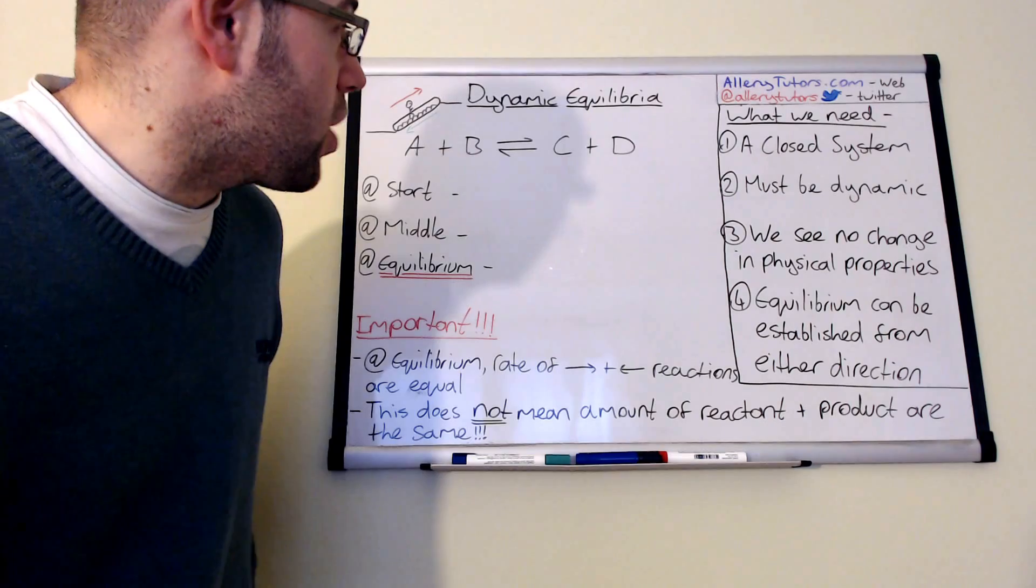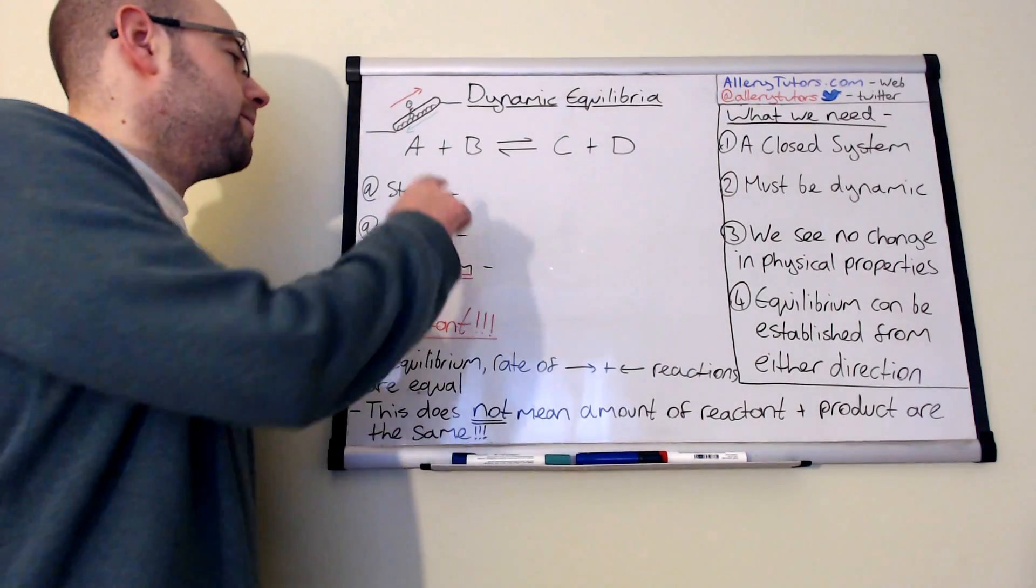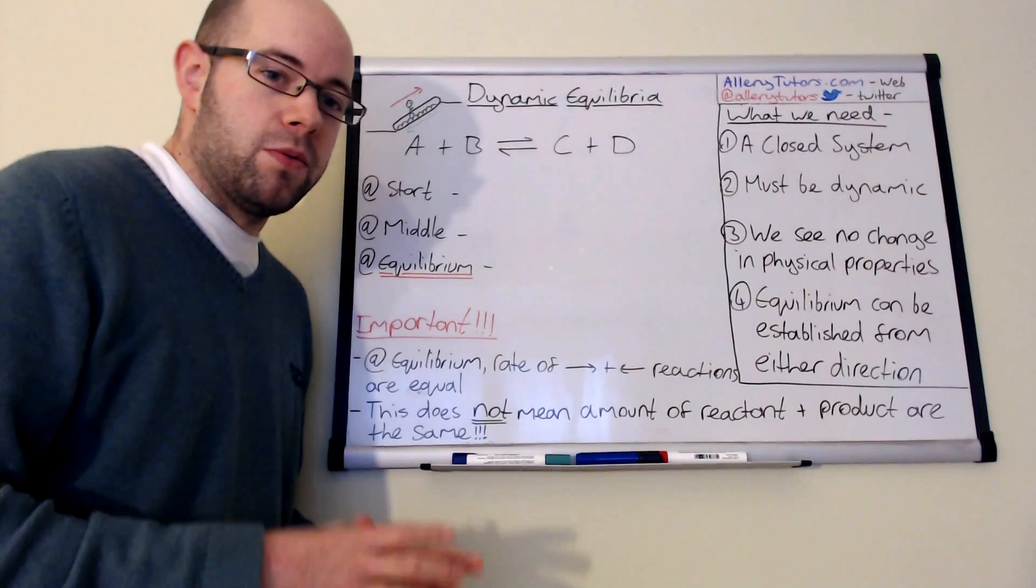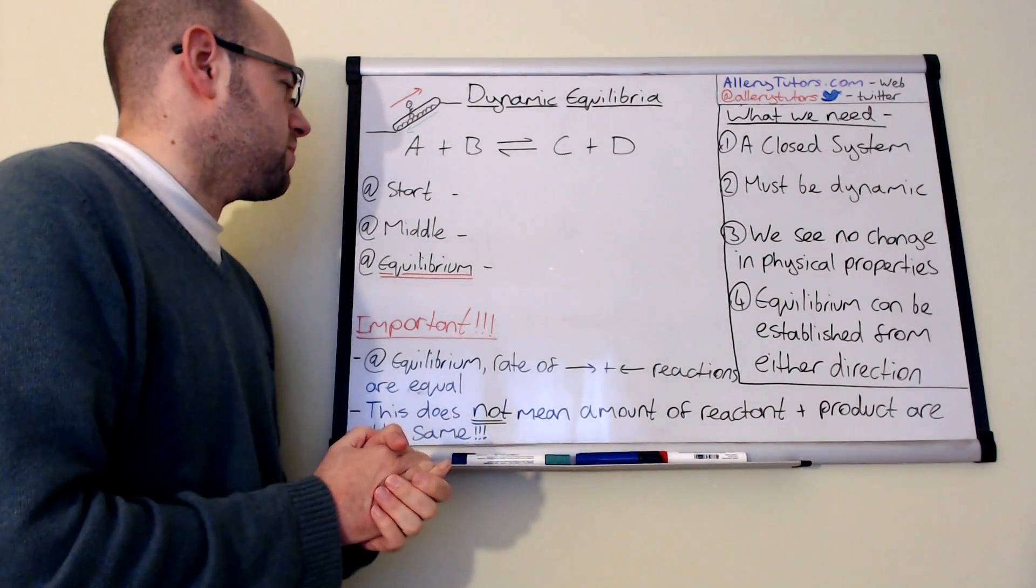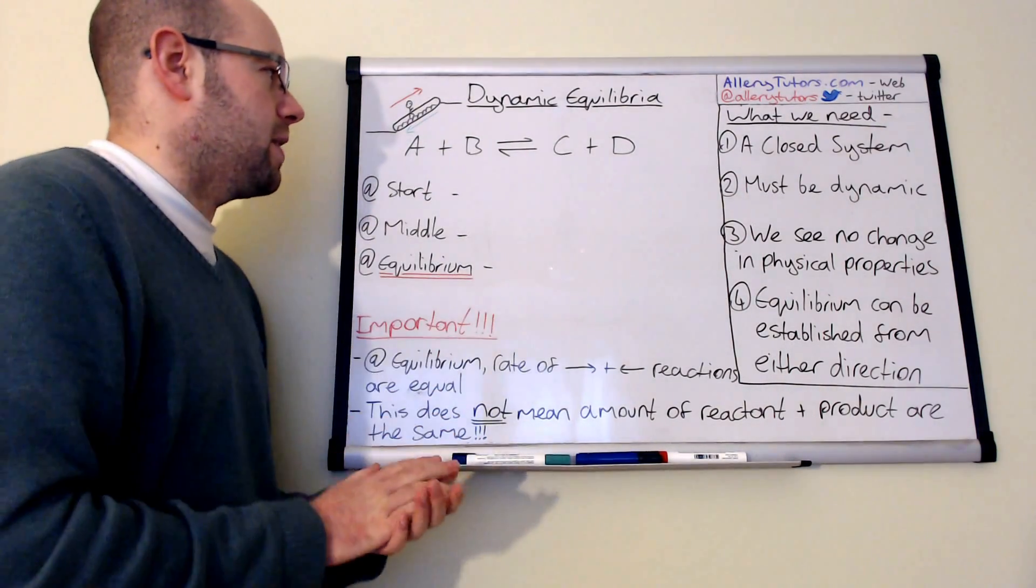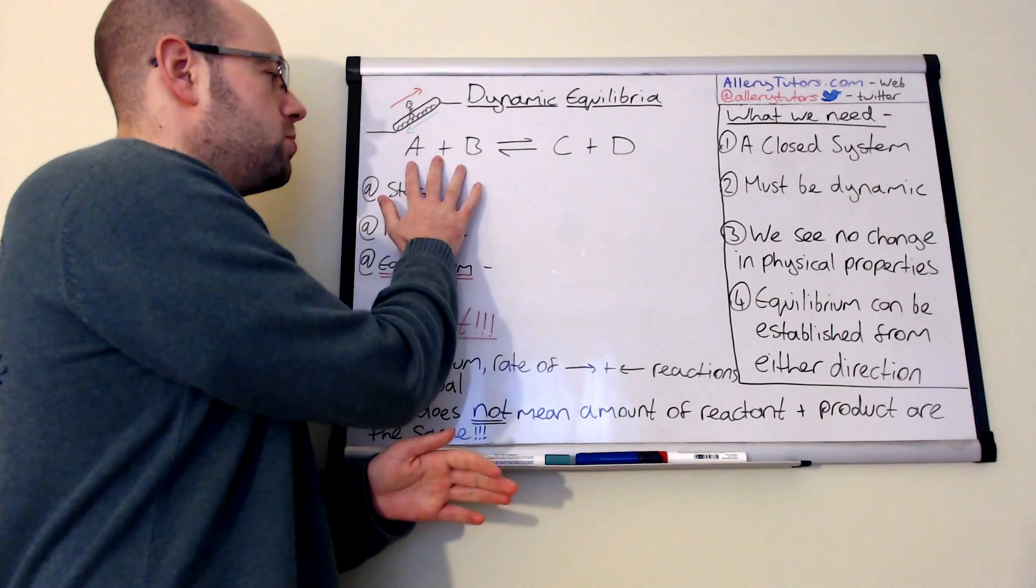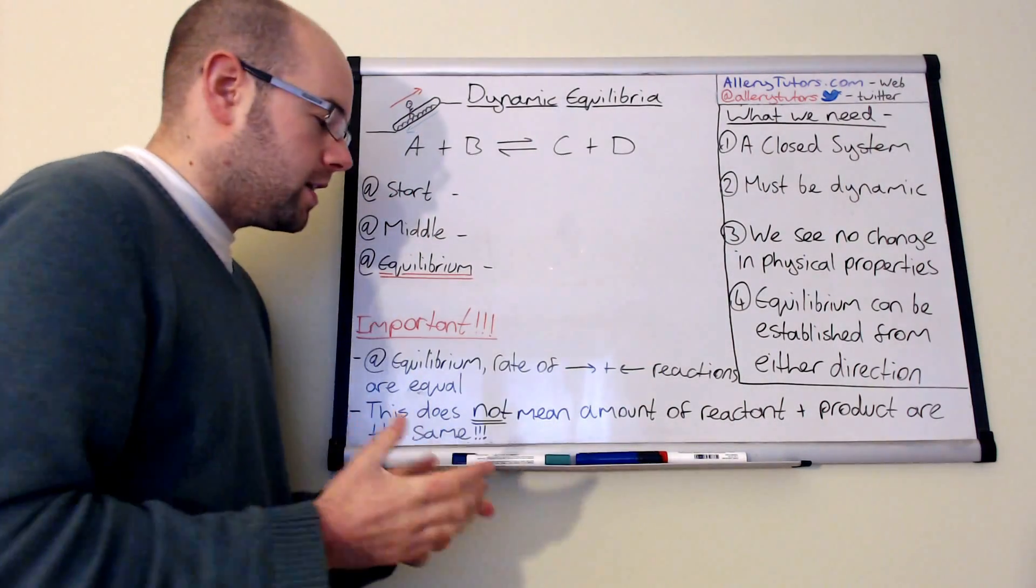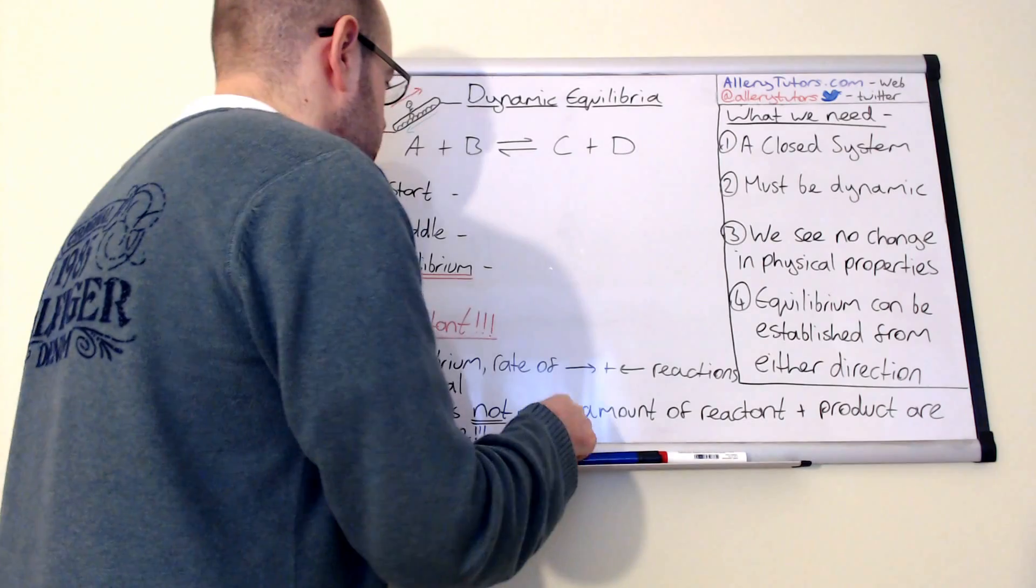We're going to start with a generic example up here. You can see we've got A + B ⇌ C + D. So we're going to see what happens in this reaction. At the start of the reaction, imagine we had loads of A and B, because these are our reactants and we don't have any C and D.